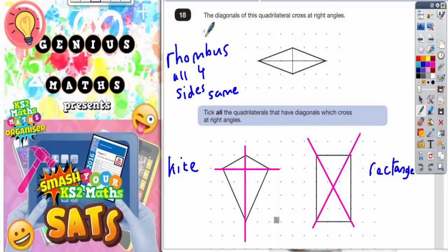Okay, so let's see what the question's got to do. It says the diagonals of this quadrilateral, which is the rhombus, cross at a right angle. Tick all the quadrilaterals that have diagonals which cross at a right angle.